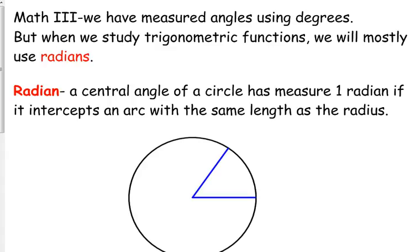We need radians to study trigonometric functions, which is what we're getting ready to do. So here's the definition of a radian. A radian is defined as a central angle of a circle. It has a measure of one radian if it intercepts an arc with the same length as the radius.